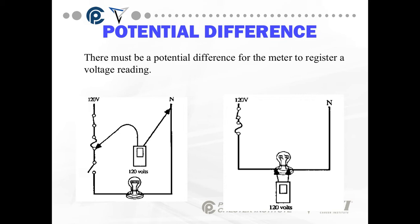In the first circuit, we go from 120 to neutral, or line to neutral. Our meter is going to register 120 volts — it doesn't matter if the switch is open or closed. The switch is on the left-hand side, the left leg. It's open, because before the switch, we still have 120 volts.